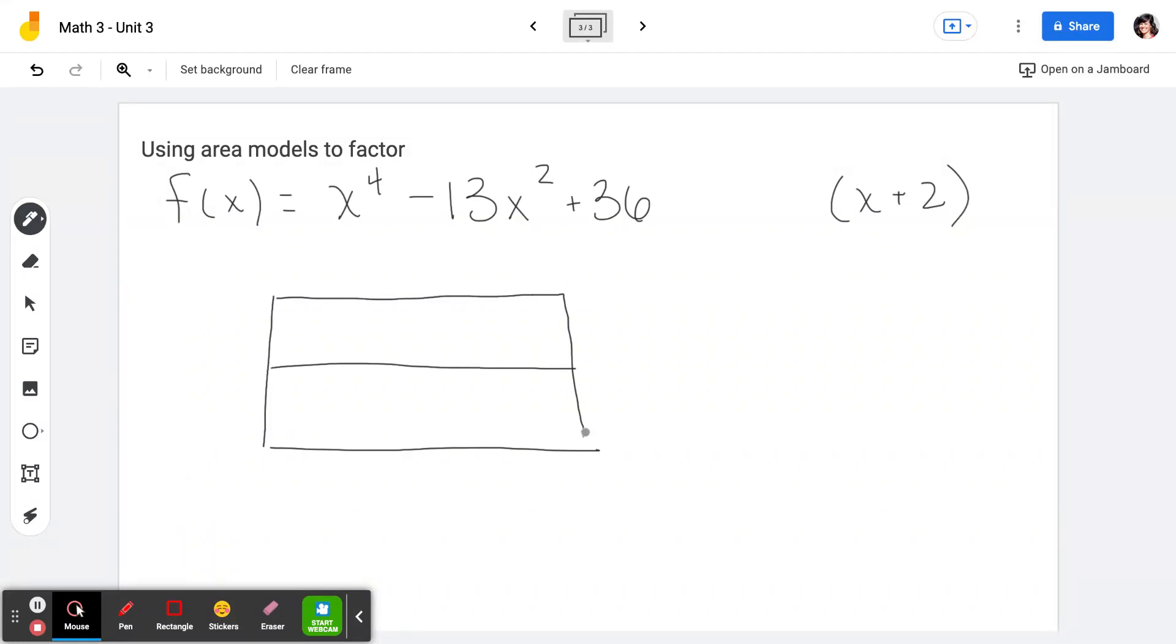I know that what I am setting up here is one factor that is just two terms and is of degree 1, which means that the other factor must be degree 3. So that means there's going to be four terms.